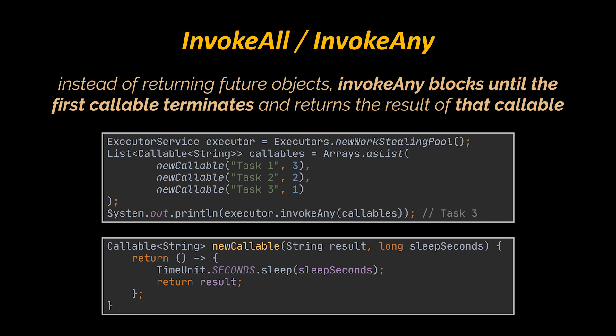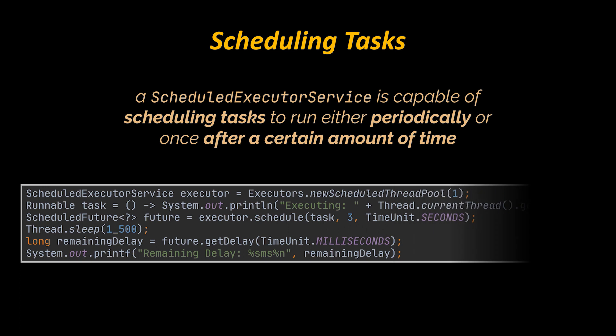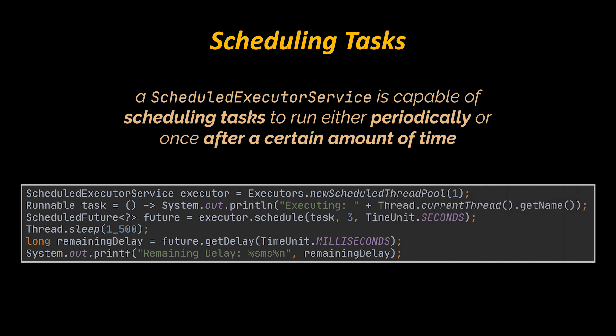We've already learned how to submit and run tasks once on an executor. However, to periodically run common tasks multiple times we can utilize scheduled thread pools. A ScheduledExecutorService is capable of scheduling tasks to run either periodically or once after a certain amount of time has elapsed. The code shown schedules a task to run after an initial delay of three seconds.